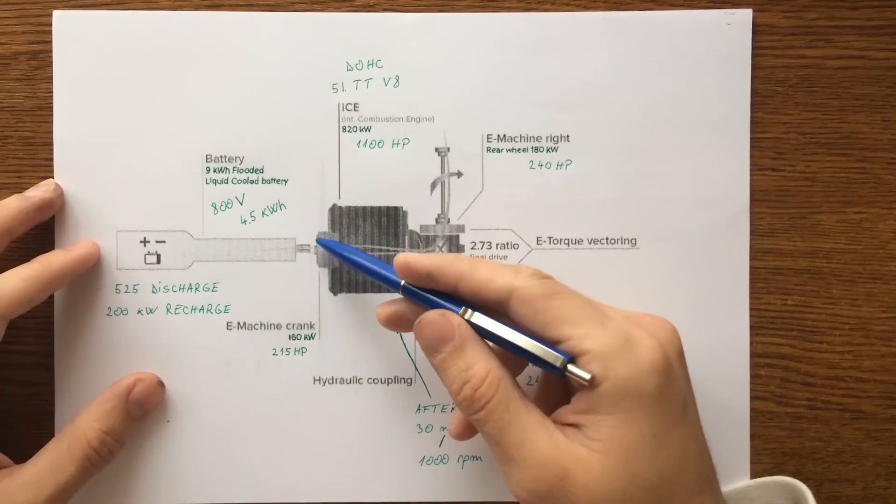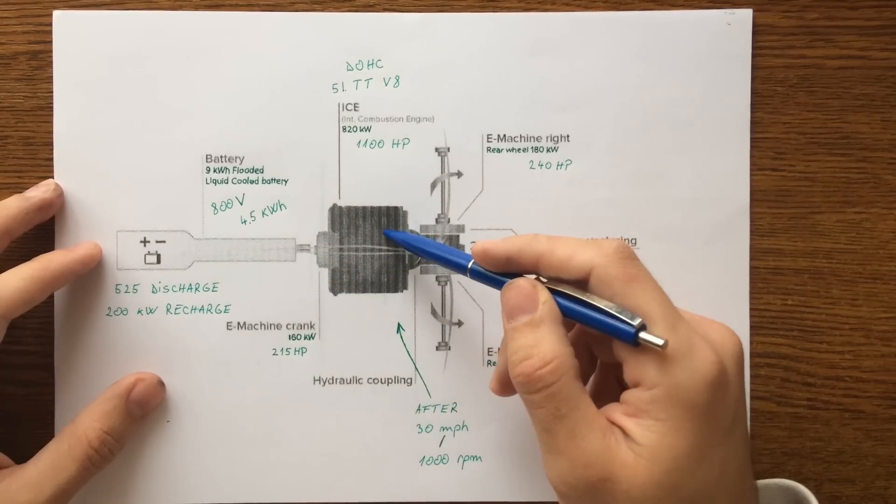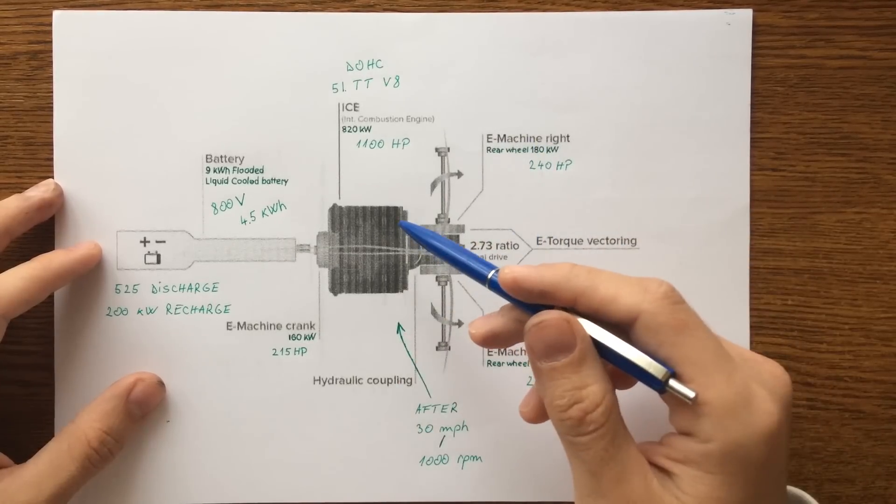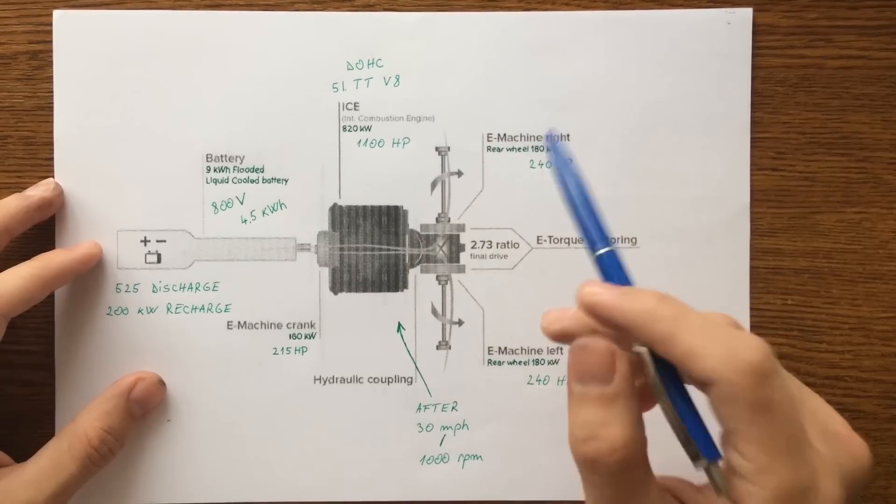After the first electrical motor is a 5 liter twin turbo V8 engine that produces around 1,100 horsepower, which is a lot.